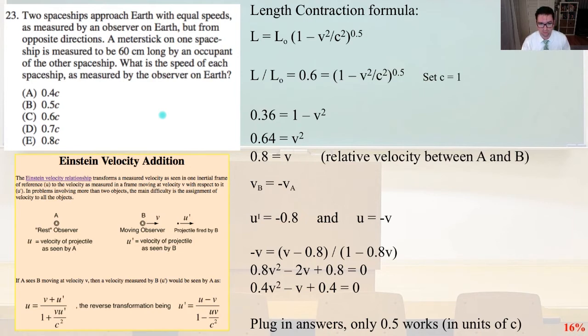Our length contraction formula L equals L0 times 1 minus v squared over c squared, that quantity square root. So, we know that the length contraction L over L0 equals 0.6. That equals 1 minus v squared over c squared. Do some algebra. V equals 0.8. That's a relative velocity between A and B. If VB equals negative VA, then we're going to call U prime and let's refer over here, thank you hyperphysics, they have a wealth of information on their website.